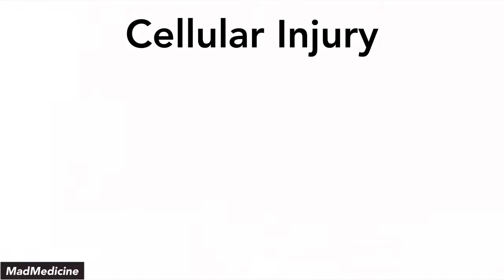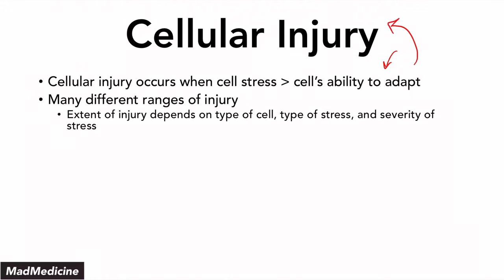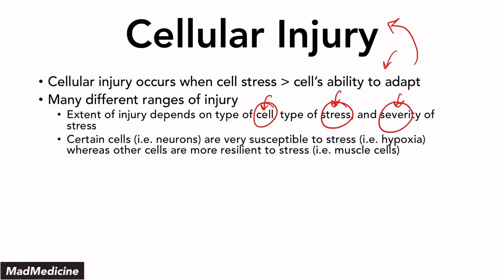Our cells can get injured when the level of stress that a cell is under exceeds the ability of our cell to adapt to that stress. Essentially when you have too much stress, our cells are not able to adapt and hence you are going to see cellular injury occurring. The extent of the injury is going to depend on three things: the type of the cell itself, the type of stress, and the severity of the stress. We do have certain cells that are more susceptible to stress like our neurons, and certain cells that are more resilient like our muscle cells.